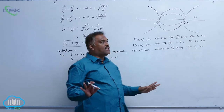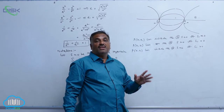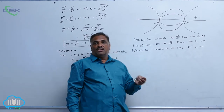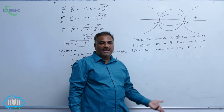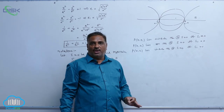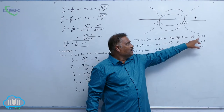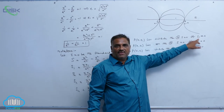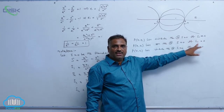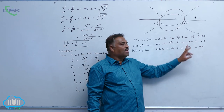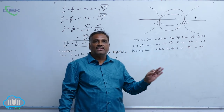This is the most important point because you may be asked to find the number of common tangents drawn from a particular point. If a point lies outside the hyperbola, you must have S₁₁ < 0. On the hyperbola means S₁₁ = 0, and inside the hyperbola means S₁₁ > 0.